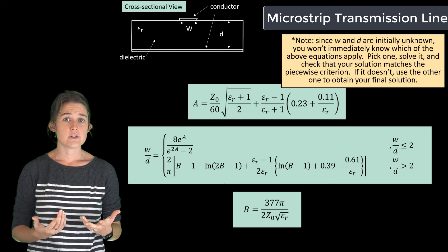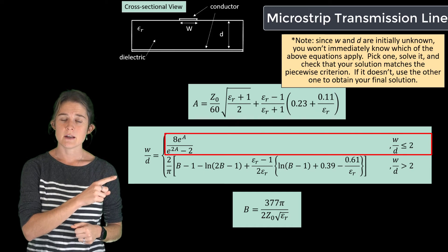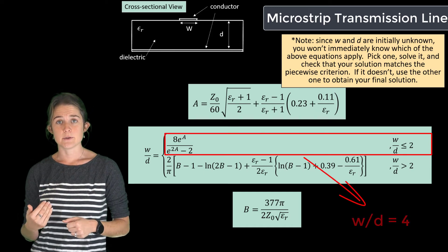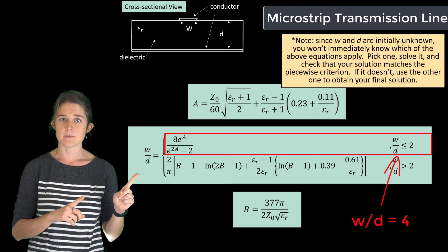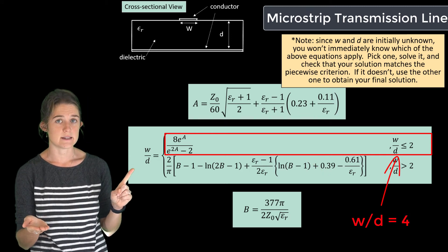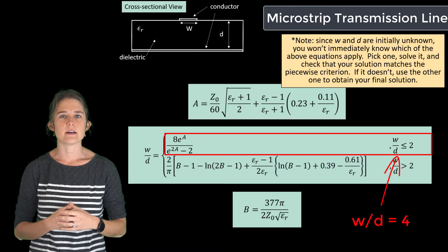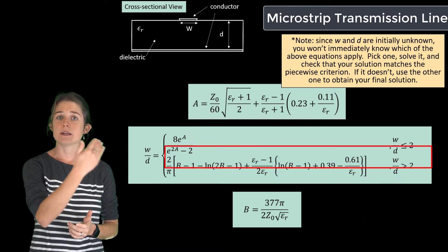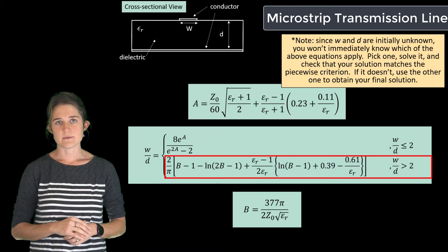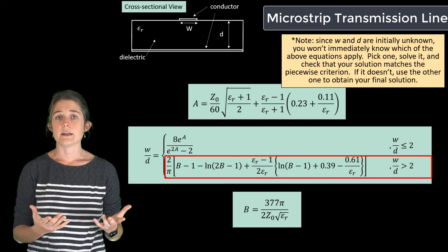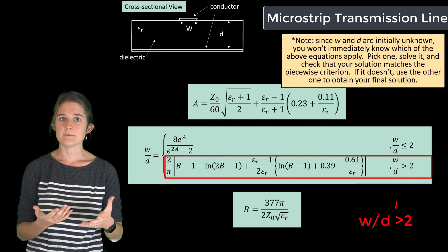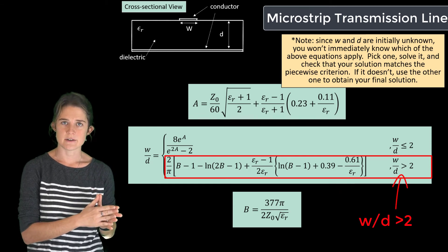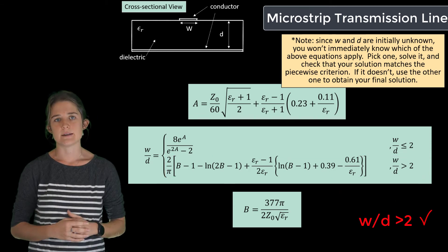So for instance, if you chose to start by using the top equation, and you ended up calculating that W over D was 4, you would compare that to the criteria for the top equation, W over D is less than 2, and realize that your initial assumption was incorrect. At that point, you would need to start over using the bottom equation. When you recalculate using the bottom equation, you should get an answer that is greater than 2 that matches the criteria for the bottom equation. So then you can move forward with that design.